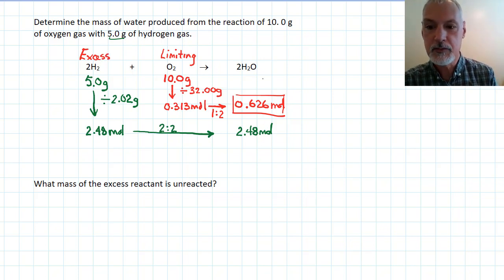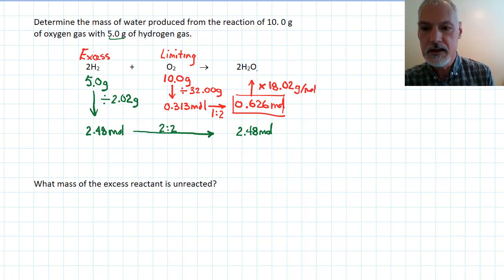In order to determine the amount of product I'm going to make, I must always use my limiting chemical. So I'm going to use that information and the molar mass of water and multiply the 0.626 by our molar mass of water. And I arrive at 11.3 grams of water.